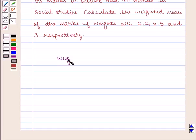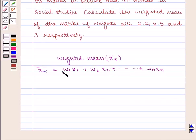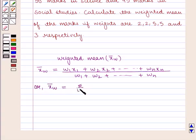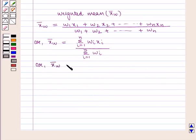Weighted mean denoted by x̄w is given by x̄w equals w1x1 plus w2x2 and so on plus wnxn upon w1 plus w2 and so on up to wn, which can also be written as x̄w equals summation of i running from 1 to n of wixi upon summation of i running from 1 to n of wi, or simply x̄w equals summation wx upon summation w.